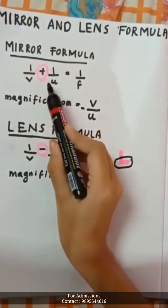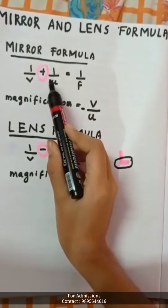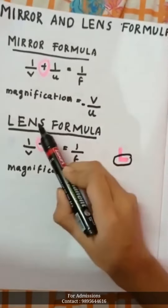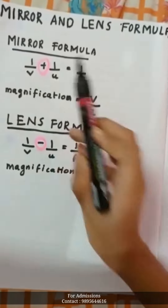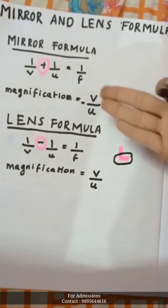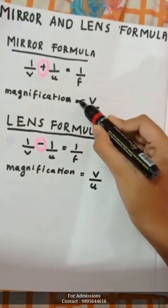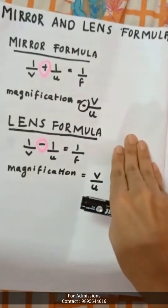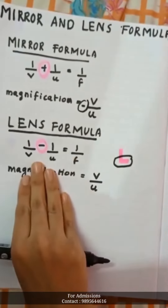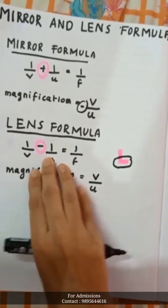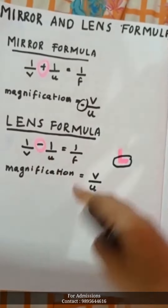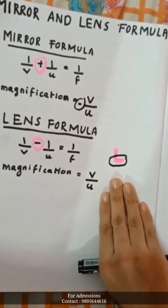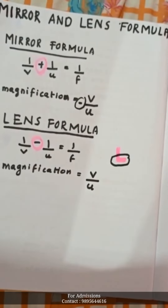The mirror formula structure is the same. Magnification also follows the same pattern, but the sign in magnification — the plus and minus signs — are opposite between the mirror and lens formulas. This is where students get confused.